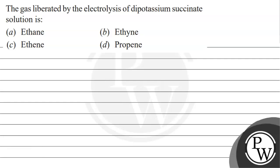Hello everyone, let's read this question. The question says: the gas liberated by the electrolysis of dipotassium succinate solution is — option A: ethane, option B: ethane, option C: ethene, option D: propene.